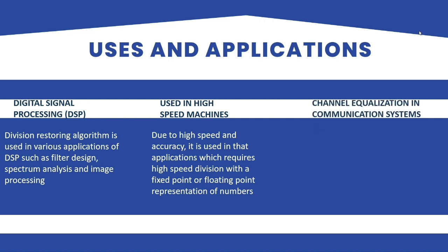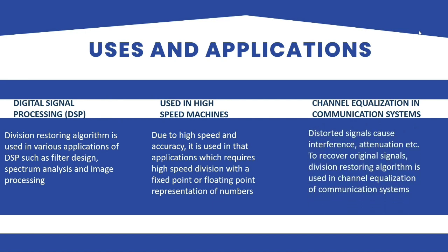The third use is in channel equalization of communication systems. Distorted signals cause interference, attenuation, etc. To recover original signals, division restoring algorithm is used in channel equalization. It can improve the performance of communication systems by reducing the errors caused by channel distortion. The algorithm can be used in various communication systems such as wireless communication, wired communication, and digital communication. It can also be used in various communication standards such as LTE, Wi-Fi, and Bluetooth to improve the reliability and efficiency of the communication systems.